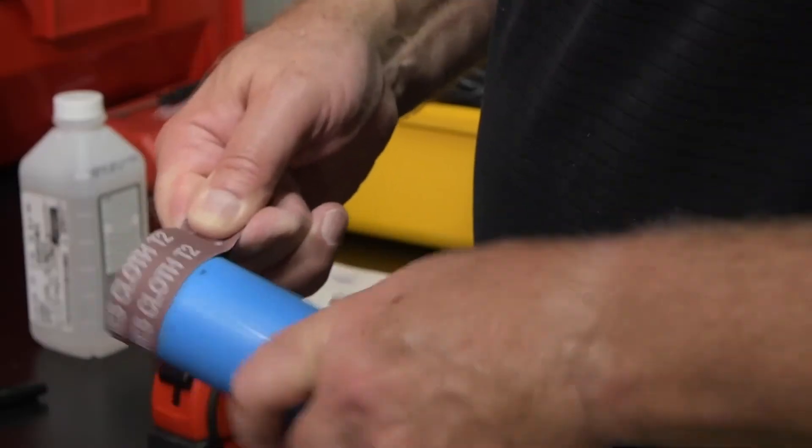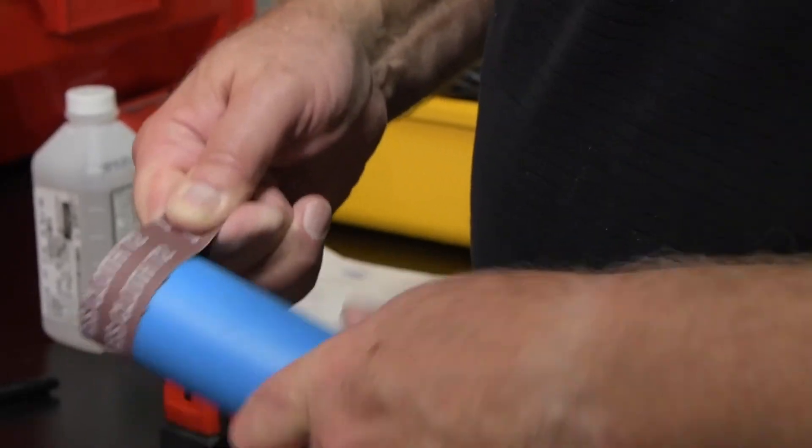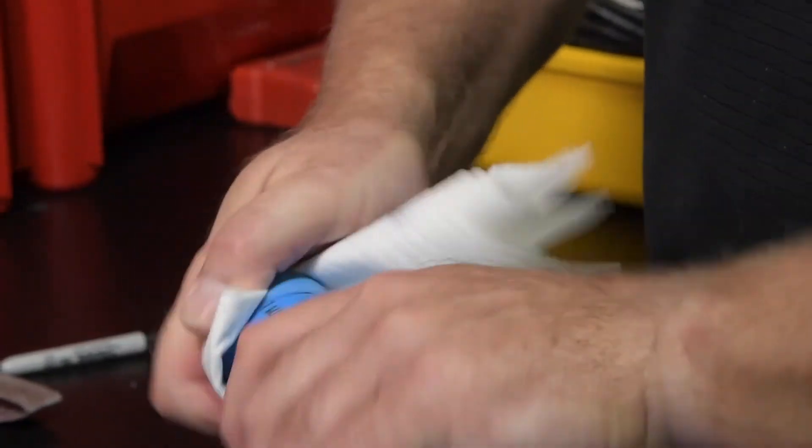Using 60 grit emery cloth, abrade the marked ends of the pipe and fitting to remove the natural sheen of the plastic. After abrasion, clean all joint surfaces thoroughly with isopropyl alcohol.